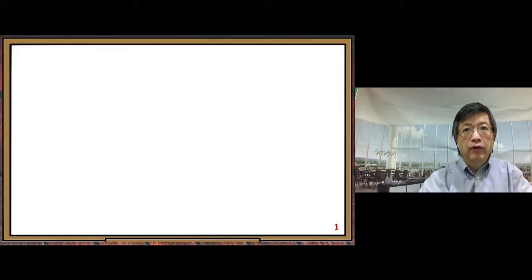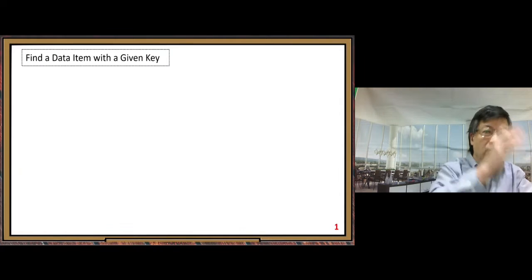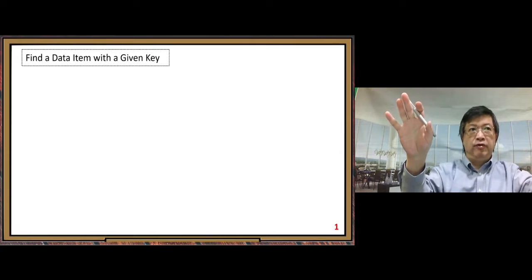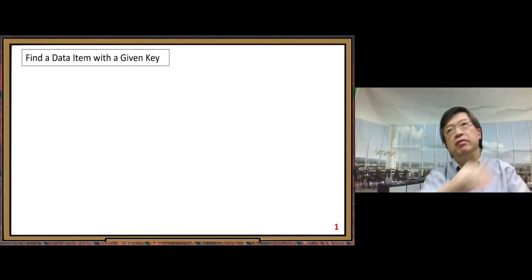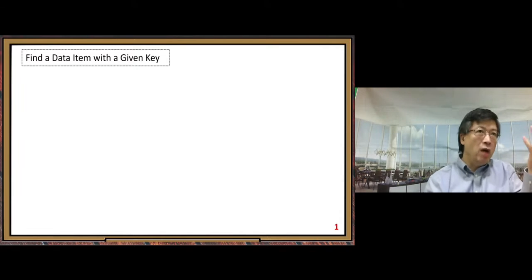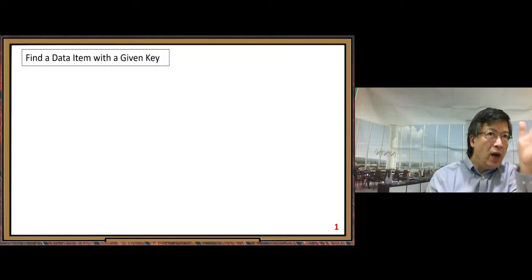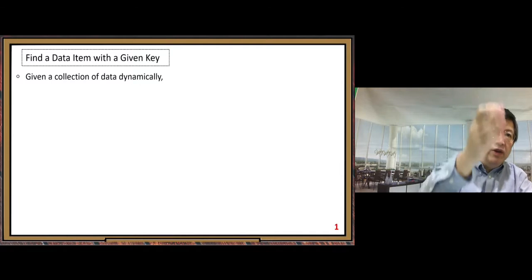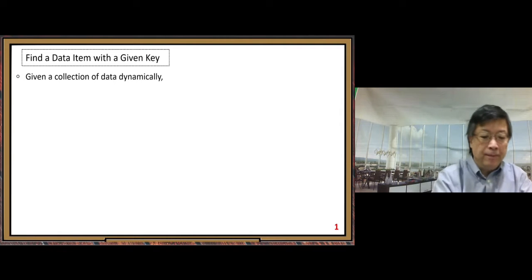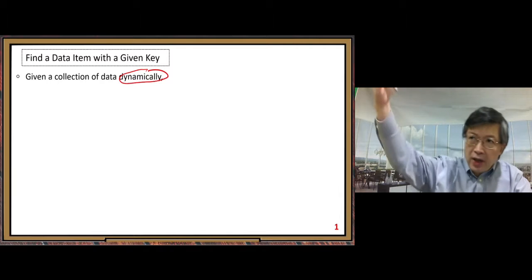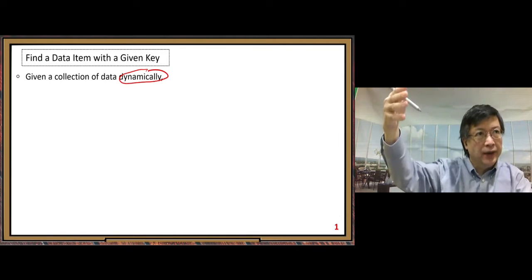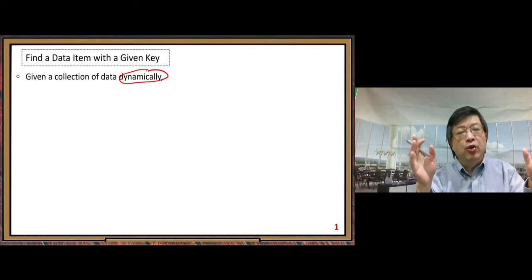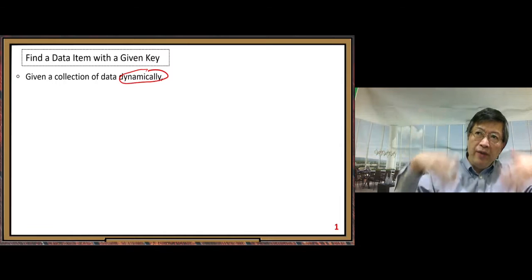First, let's look at the problem we want to solve. Here we look at a very general problem: find a data item with a given key — that's the search problem. We need to search some data item but we need to have a search key, so it is very general. We consider the real world situation where data comes in dynamically, on the fly, and we keep accepting new data items.